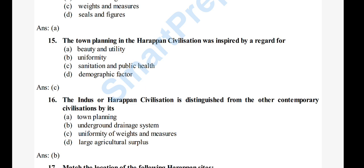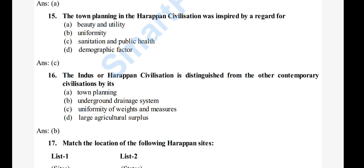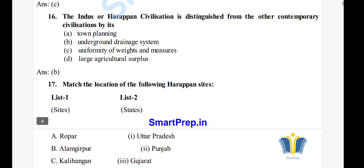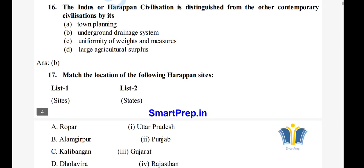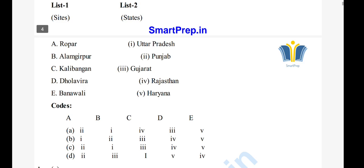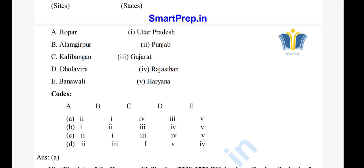Question 17: Match the location of the following Harappan sites — A) Ropar: Punjab, B) Alamgirpur: Uttar Pradesh, C) Kalibangan: Rajasthan, D) Dholavira: Gujarat. The right answer is option A, Ropar in Punjab. Alamgirpur is in Uttar Pradesh, Dholavira is in Gujarat.